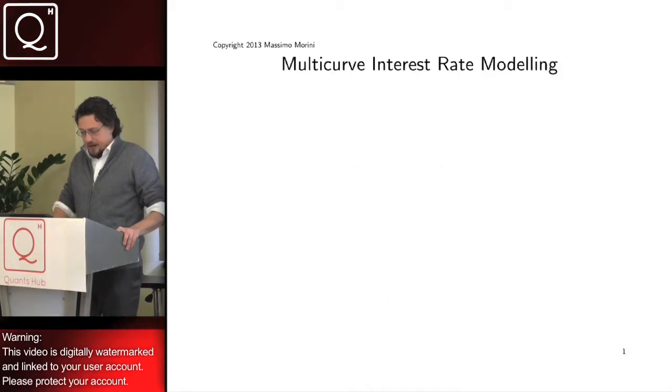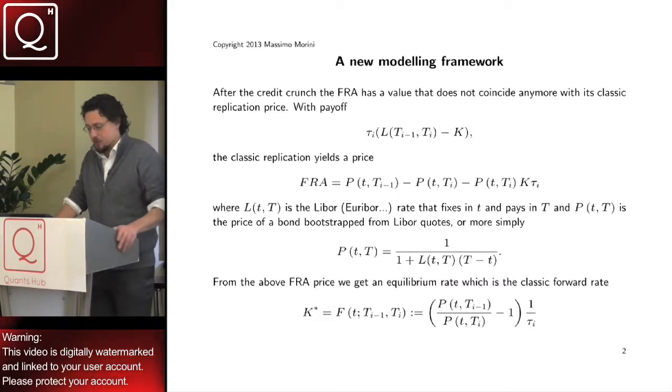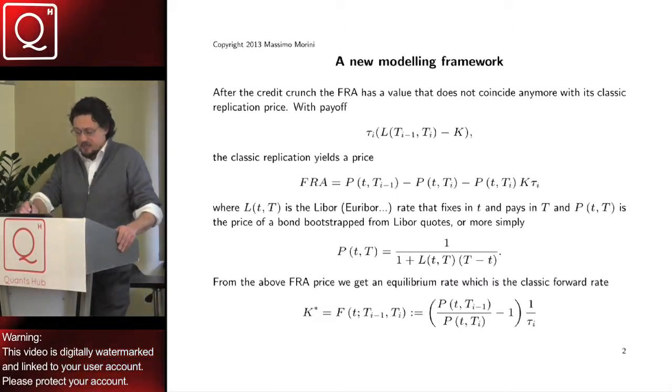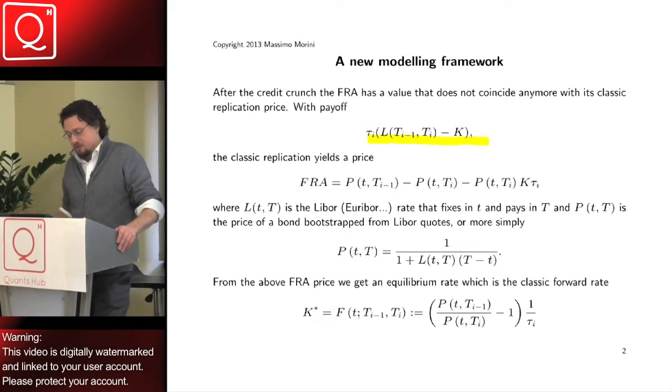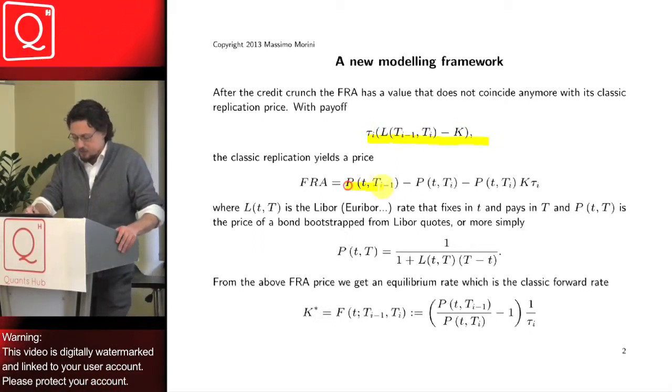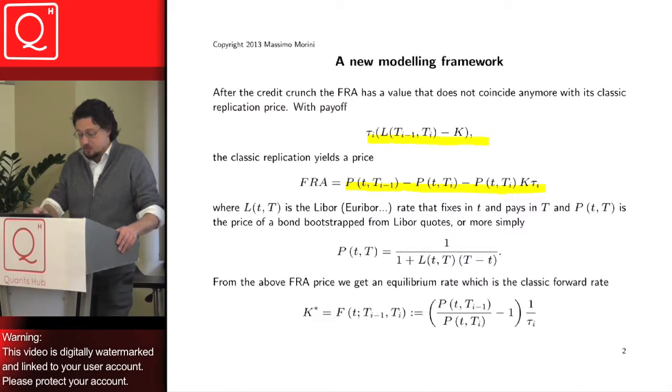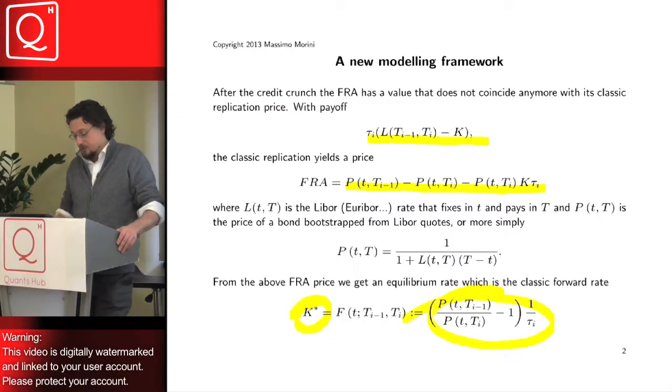Essentially, let us revise a few passages of what we have already seen about multi-curve. We have seen that the FRA payoff can be replicated in classical interest rate modeling, getting this price, and this price leads us to see that the equilibrium rate of a FRA can be expressed in terms of a bond ratio.